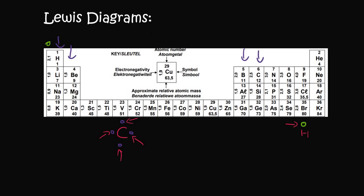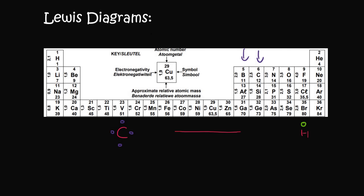In grade 10 you would have looked at the Aufbau diagram, where electrons were always in pairs of two — if possible, sometimes there weren't enough electrons and they would be single, but if possible they bond in pairs of two. Pause the video and think about how you can bond these two atoms together in the best possible way, where all the lone single electrons can bond together.